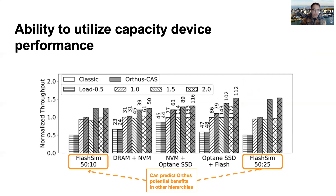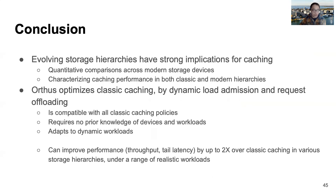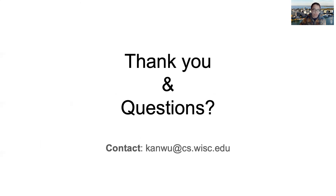We also provided results in simulated hierarchies with five times and two times performance differences. Our results with similar hierarchies can help users predict how much benefit they can get when applying Authors in their own cases. To conclude, through quantitative comparisons across today's storage devices and performance characterization of caching in both classic and modern hierarchies, we show how the evolving storage market has strong implications for caching design. We introduce Authors, which optimizes classic caching via dynamic load admission and request offloading. With its good properties, we believe Authors is flexible enough to be applied in many scenarios. Thank you for listening — all questions are welcome.